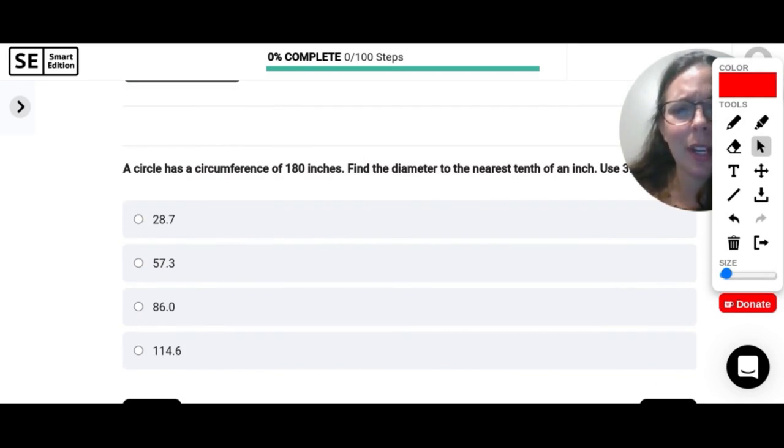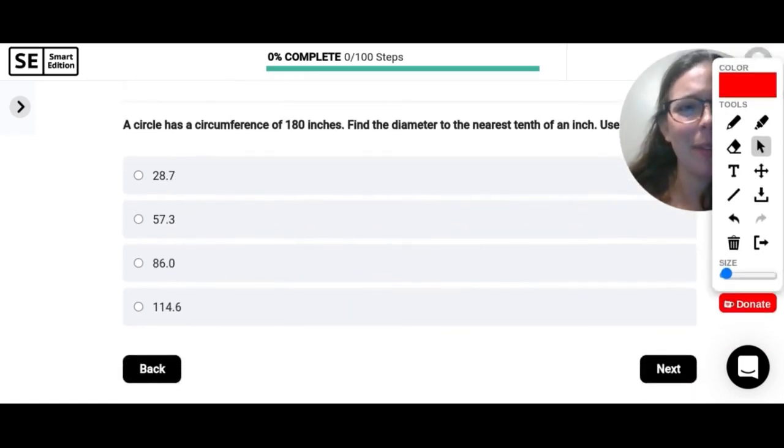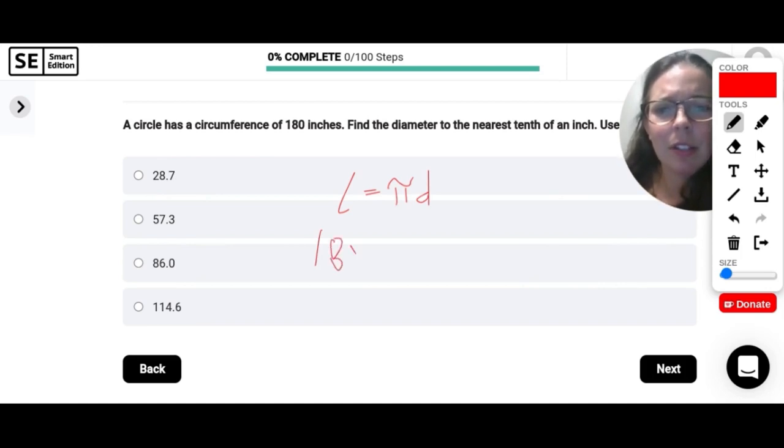A circle has a circumference of 180 inches. Find the diameter to the nearest tenth of an inch. Use 3.14 for pi. So circumference equals pi times diameter. So our circumference is 180 and we're using 3.14 for pi and it wants us to find the diameter to the nearest tenth of an inch. So all I have to do is divide each side by 3.14. So when I do that, I get about 57.3 as my diameter.